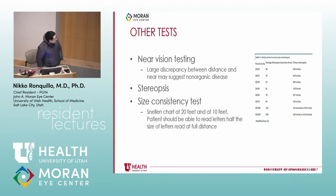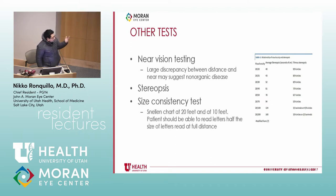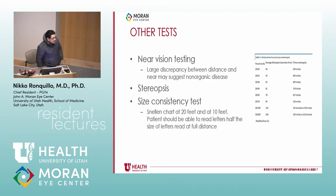There's also a size consistency test: our Snellen charts are calibrated at 20 feet. If you move a manual chart closer to 10 feet, the patient should be able to read letters at least half the size they can at full distance. That's easy to do in most clinics.